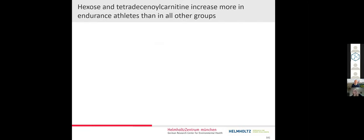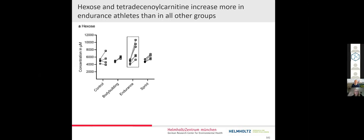We also looked at if there is a specific exercise effect in one group. So is one metabolite different in one group reacting to the exercise compared to the other groups? I want to highlight one finding: we found that this is the case for hexose, also for tetradecanoylcarnitine, which were increased more in endurance athletes than all other groups. You can see that endurance athletes have a higher concentration change in hexose compared to all the other subjects.